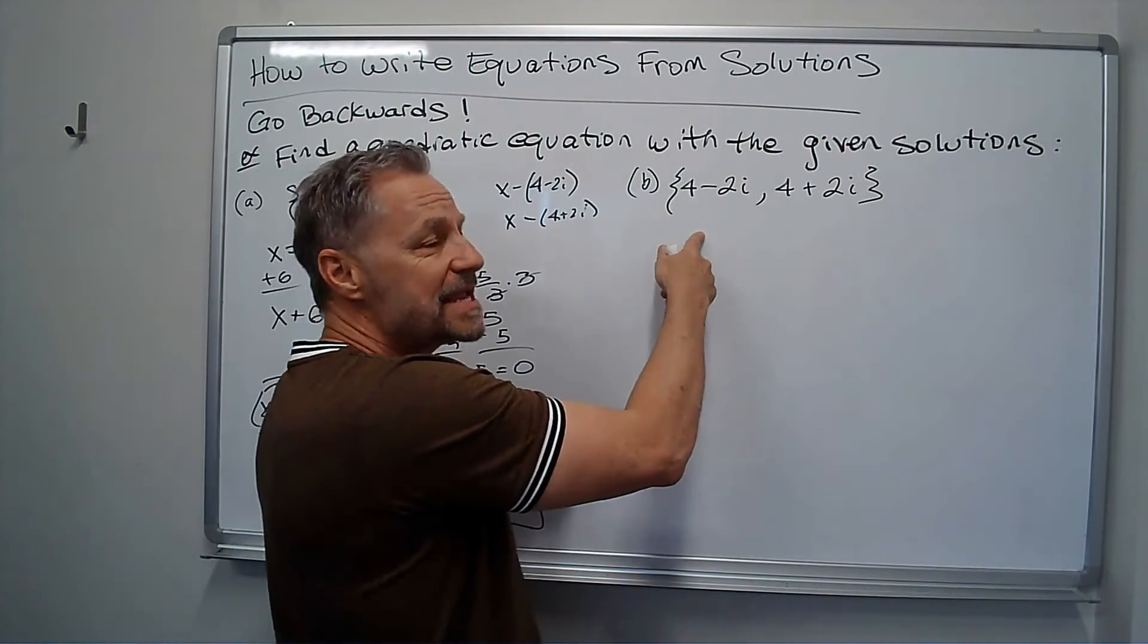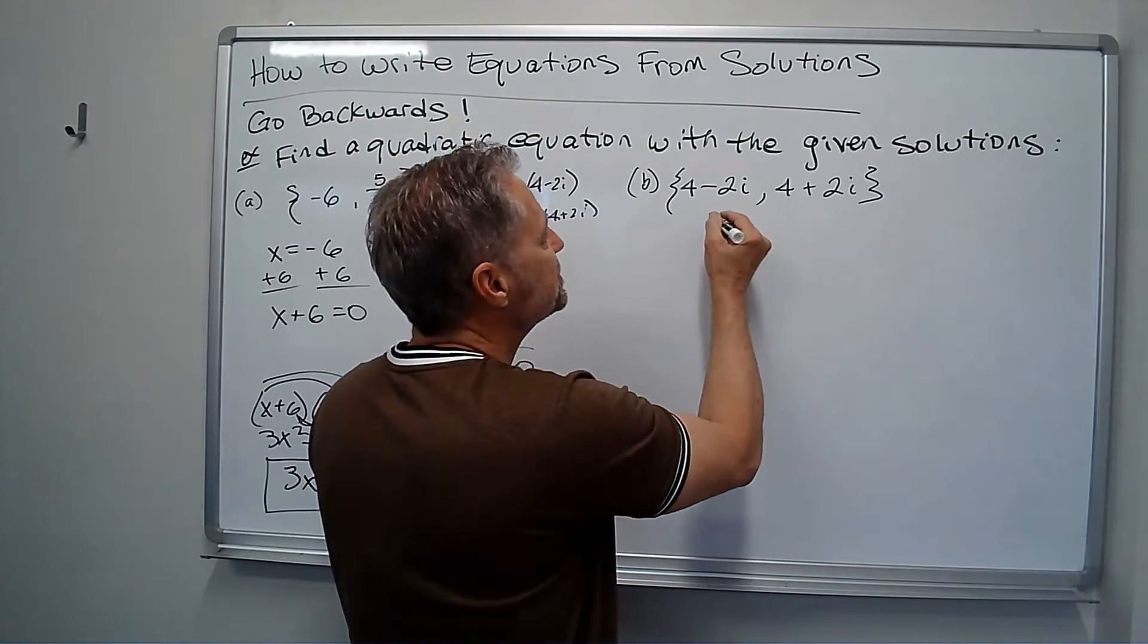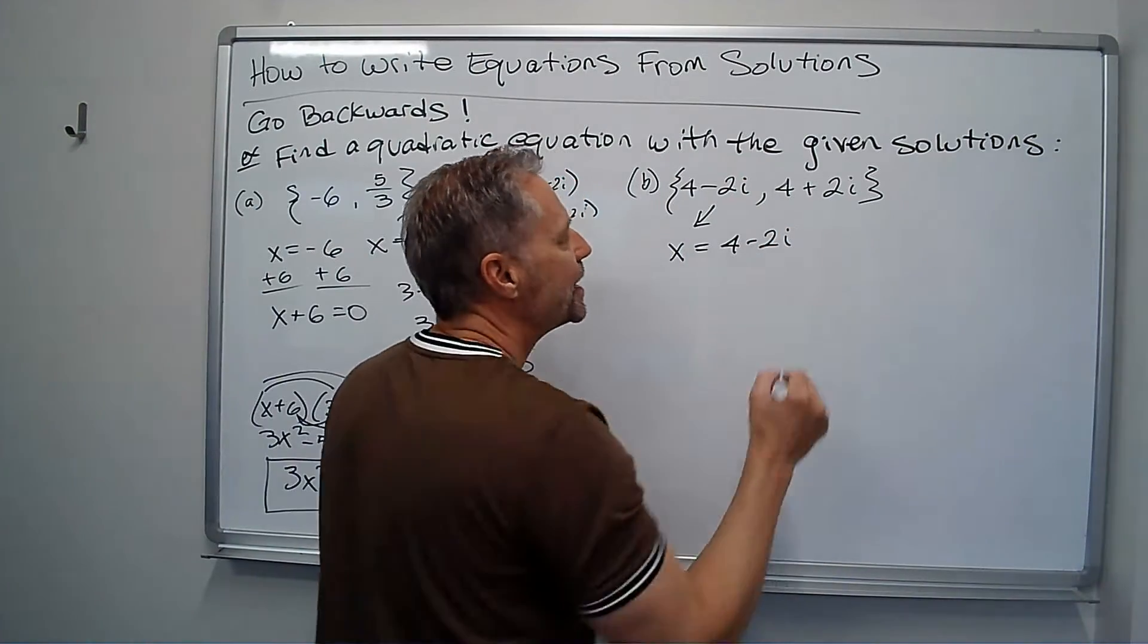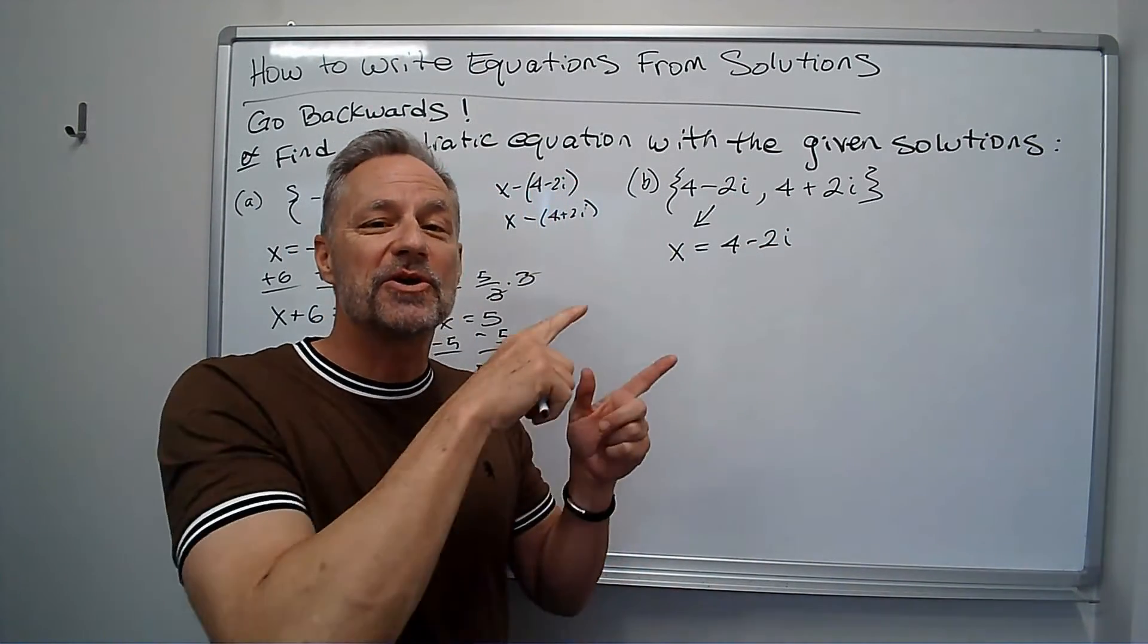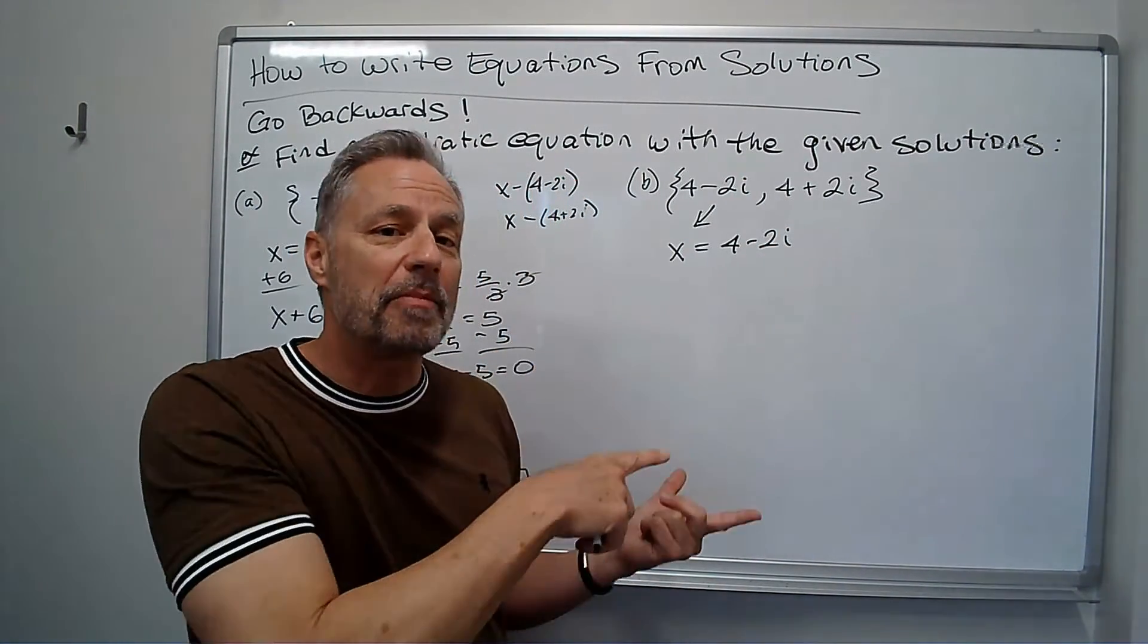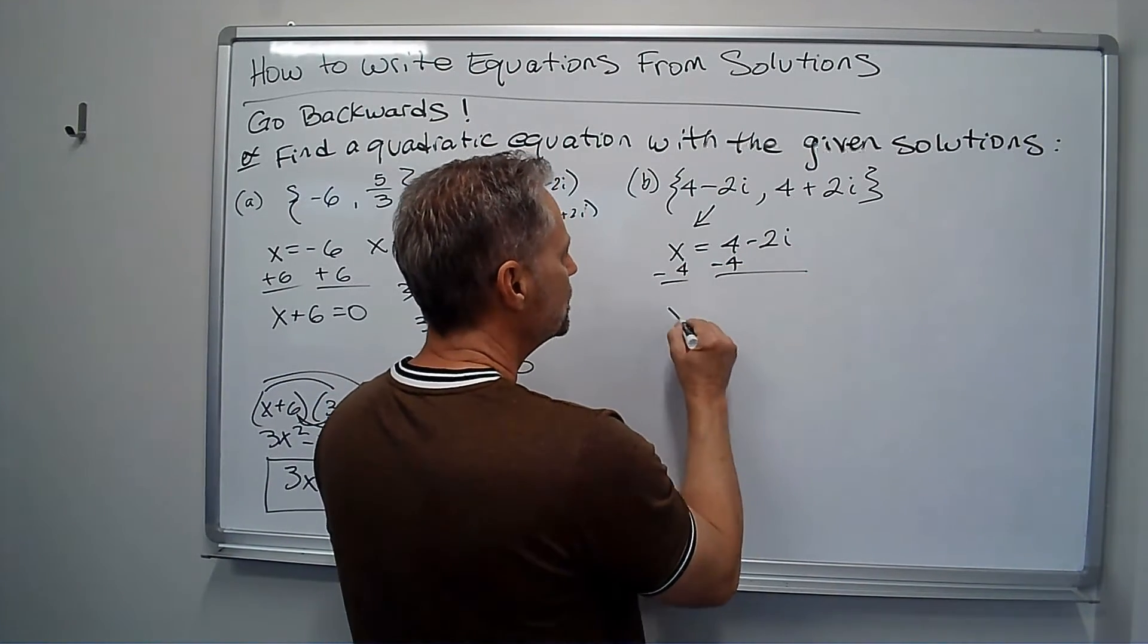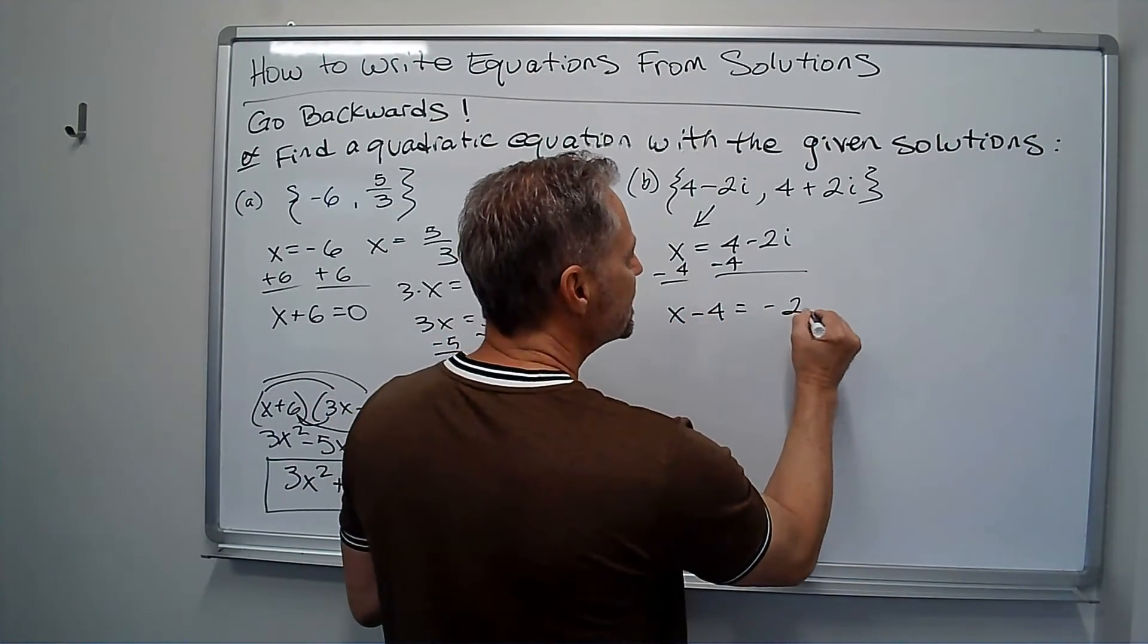The idea is take either one of them. It doesn't matter, they're going to work out the same way. Let's say if x equals four minus two i. What I want to do is get the imaginary part all by itself. So I'm going to subtract four. So I've got x minus four equals negative two i.